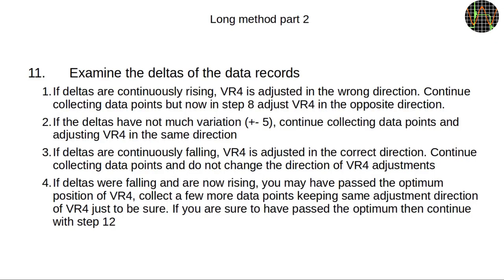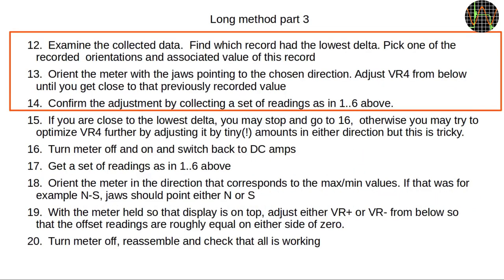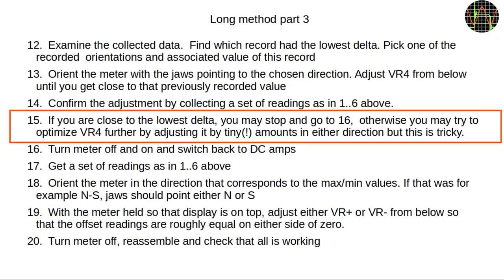Just to finish off, part 2 of the long method describes what I just showed in the spreadsheet. You examine the deltas, try to establish if you are on the rising slope and if so, reverse VR4 adjustment direction until you found both sides of the slopes with a value of the optimum position in between. Steps 12 to 14 describe the trick on how to get back to close to the optimum position by taking one of the orientations. You don't have to plot the values as I did for this video. The ballpark number to adjust VR4 to is usually easy to establish by just looking at the recorded data.